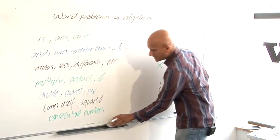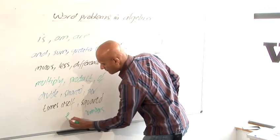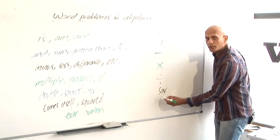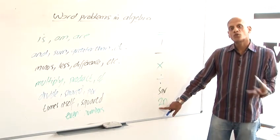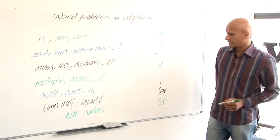Similarly, if it said, instead of saying consecutive numbers, if it said an even number, and we didn't know what the even number was, we would call it 2n, the 2 in front of it, making sure that it's even, because whatever n is, it will be multiplied by 2 to give us an even number.